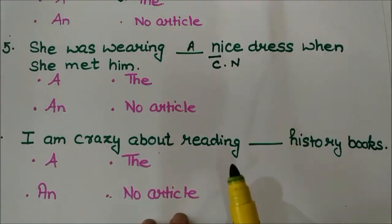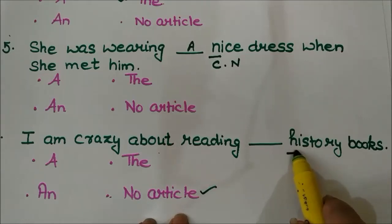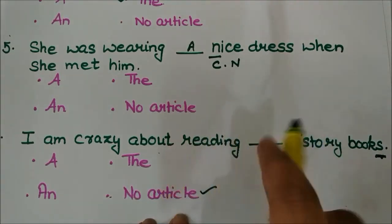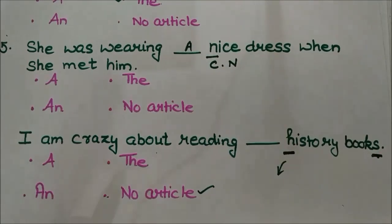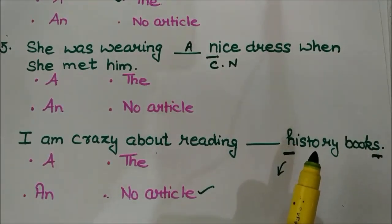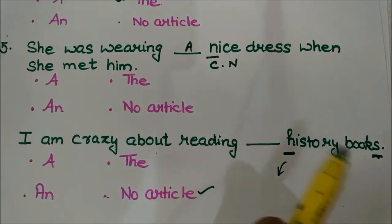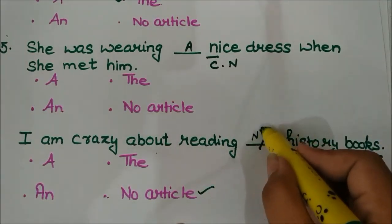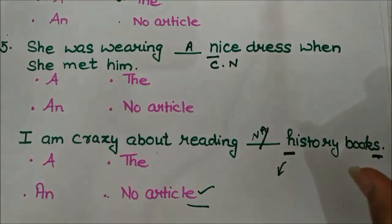Next question: 'I am crazy about reading ___ history books.' This one is a bit different — there will be no article here. We cannot use 'a' because 'books' is plural. 'An' does not fit the sound, and 'the' is not used because no particular history books are being discussed. History books can be of various standards and time periods, so no specific set is meant. The answer is: 'I am crazy about reading history books' — no article. Such questions can also appear in exams.